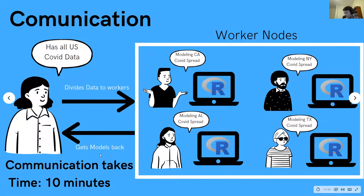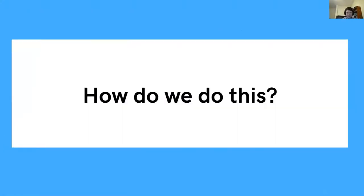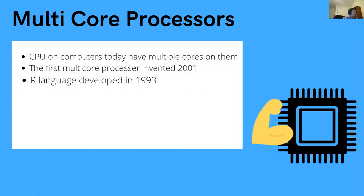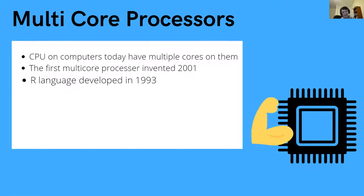So that's the main intuition. How do we actually do this? What makes this possible is multi-core processors. You have the CPU on the computer and it runs all the calculations and code. Most computers today have four cores on their CPU, and multi-core processors were invented in 2001 — so they're actually pretty new technology in the grand scheme of things.